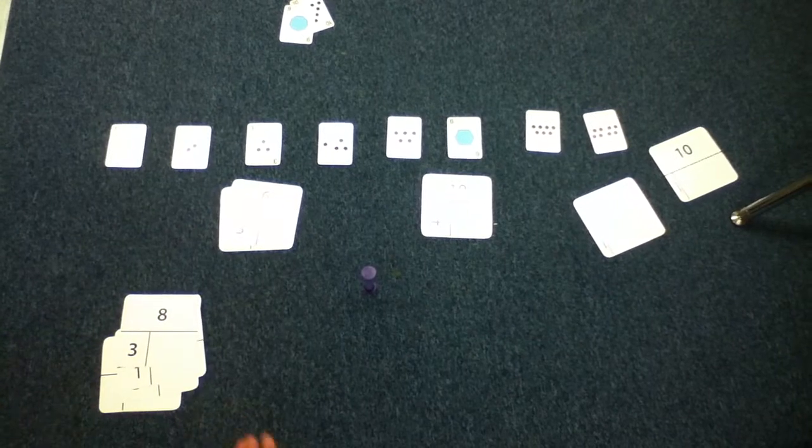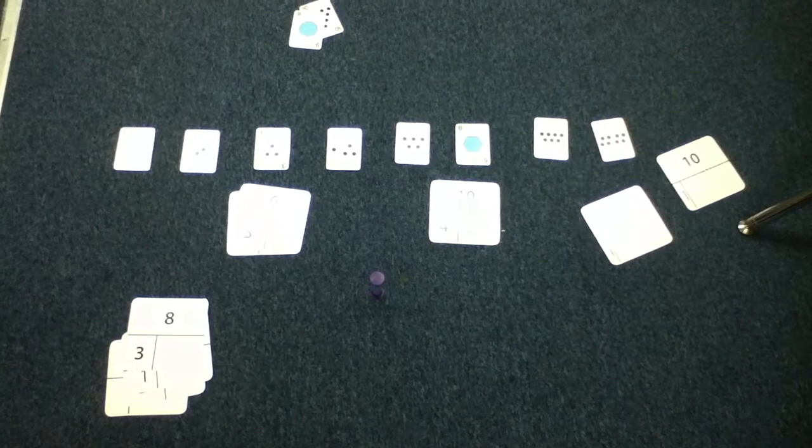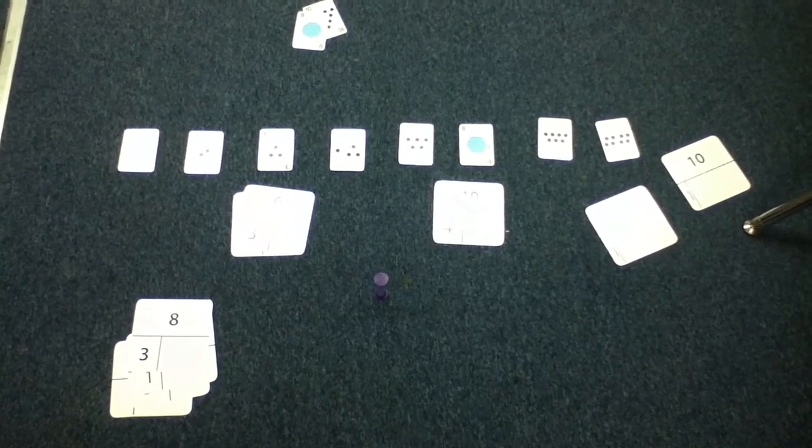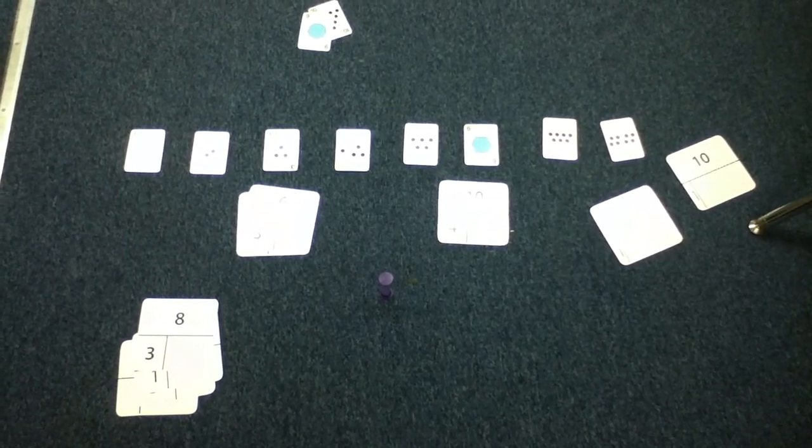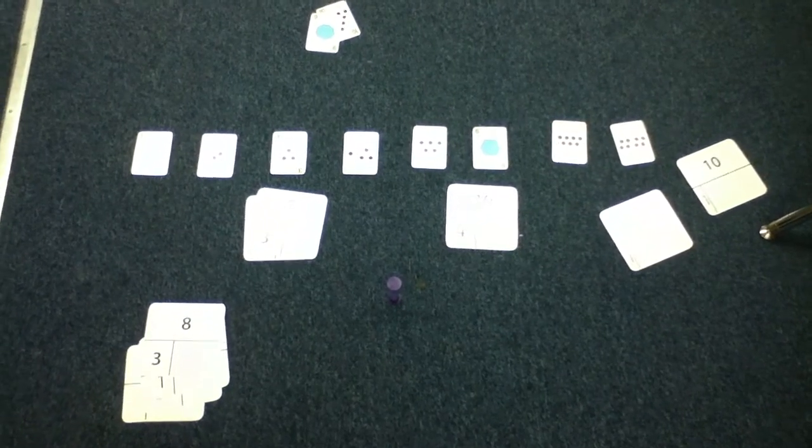Let's say within a minute, I was able to sort 20 cards correctly. I would put 20 on my dry erase board. Then my partner would go and sort 25 correctly.